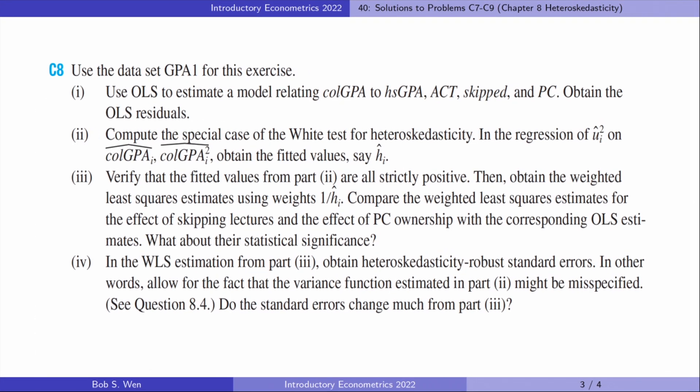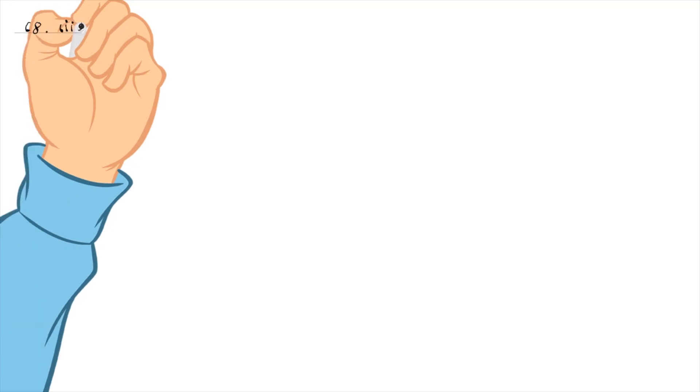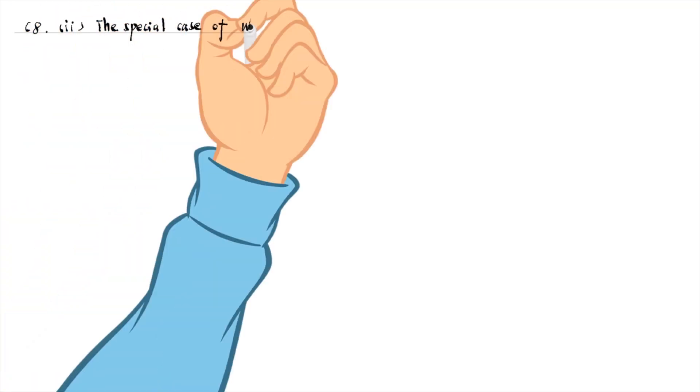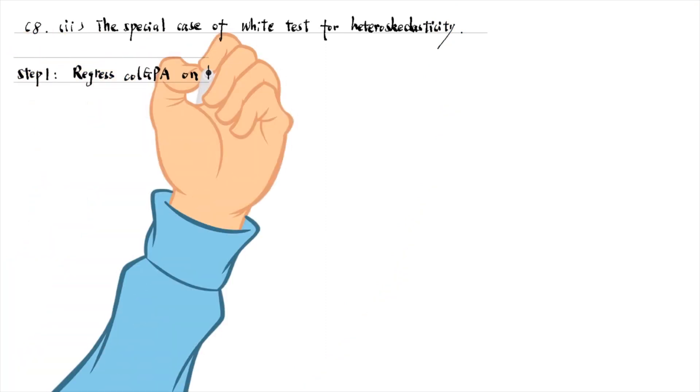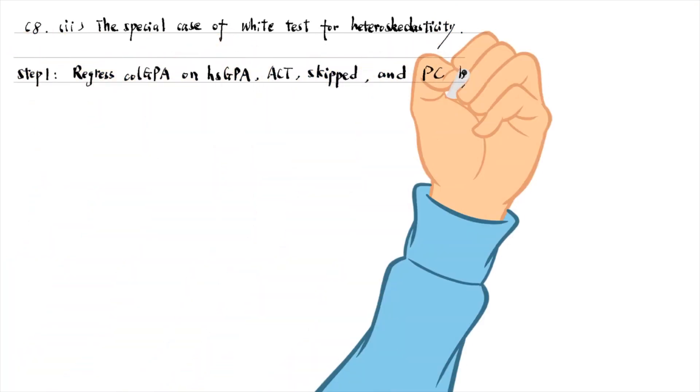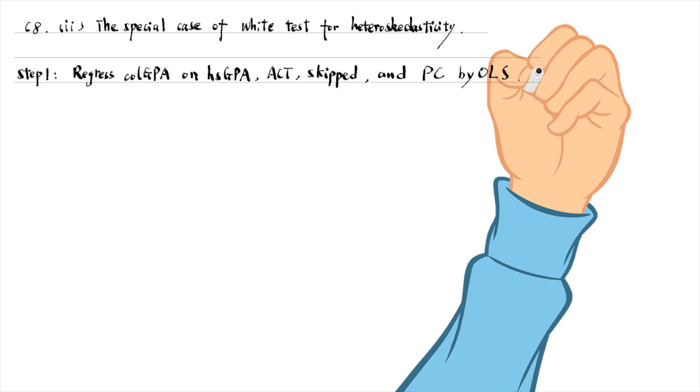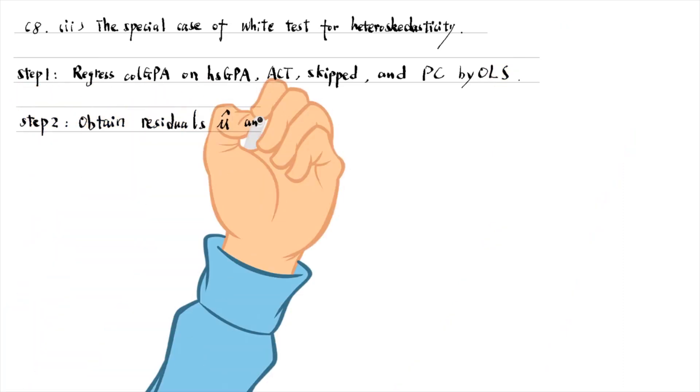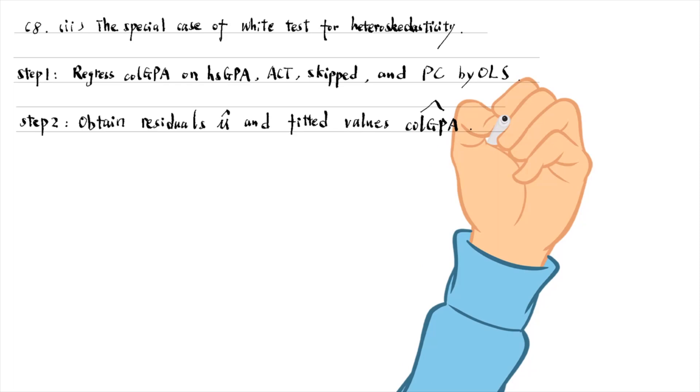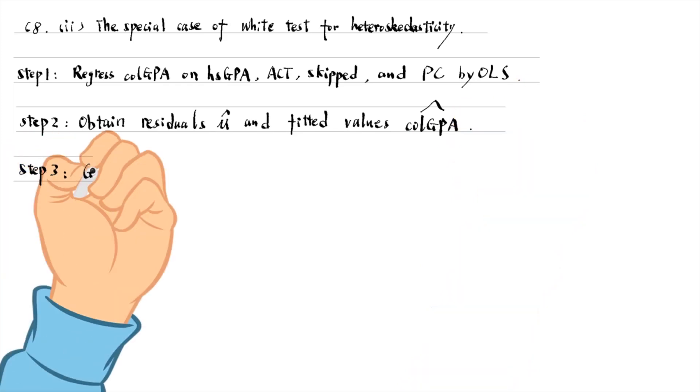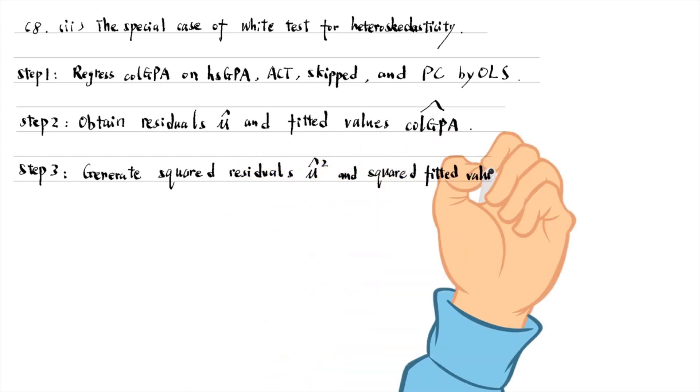Let's solve computer exercise 8. We follow the steps of the special case of the White test for heteroscedasticity. We first regress college GPA on high school GPA, ACT, skip-pect and PC by OLS. Then we obtain the residuals and fitted values using the predict command in Stata. After that, we regress the squared residuals on fitted values.